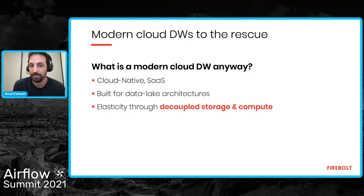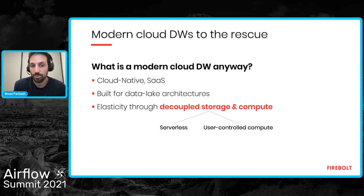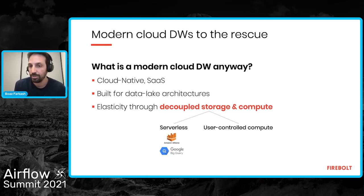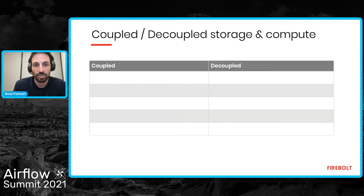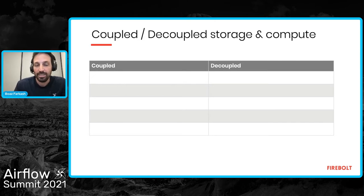There are two flavors of decoupled storage and compute architectures: serverless and user-controlled compute. Serverless products like Athena and Google BigQuery let you throw data to the storage layer and start querying without making compute decisions, versus products like Snowflake and Firebolt where you choose your cluster size. But why is decoupled storage and compute so crucial? Let's understand how it enables data applications at scale.